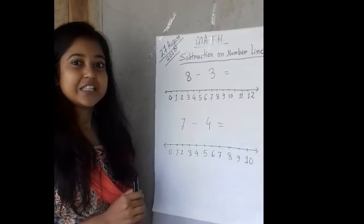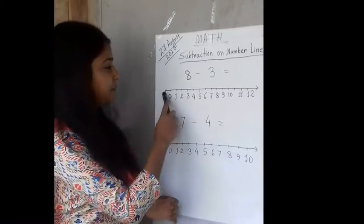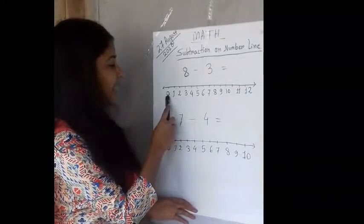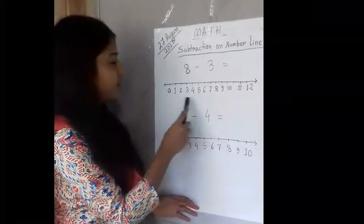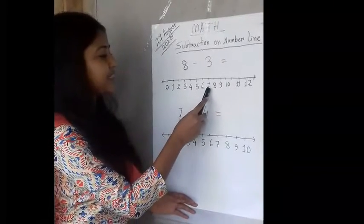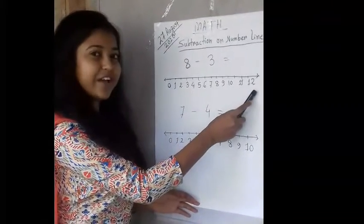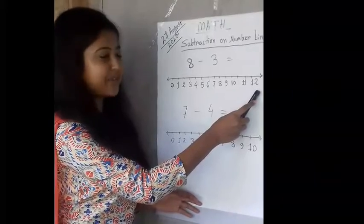Let's see how we can subtract on a number line. See, this is a number line. I have written numbers here: 0, 1, 2, 3, 4, 5, 6, 7, 8, 9, 10, 11, 12. I have written 12 numbers here.